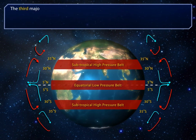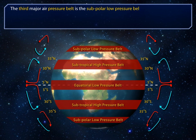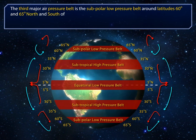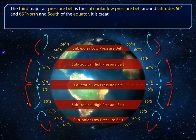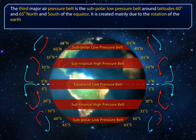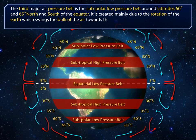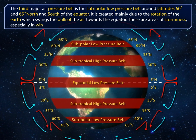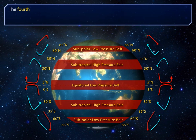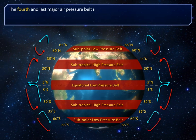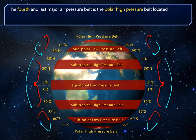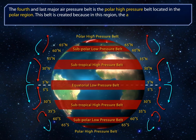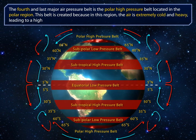The third major air pressure belt is the subpolar low pressure belt around latitudes 60 degrees and 65 degrees north and south of the equator. The fourth and last major air pressure belt is the polar high pressure belt located in the polar region. This belt is created because in this region the air is extremely cold and heavy, leading to a high pressure.